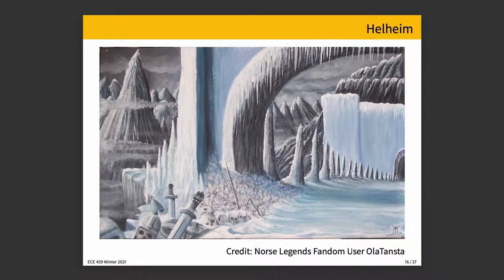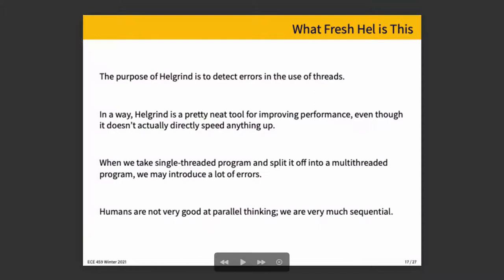We'll take some time to talk about Helgrind. Helgrind, here pictured Helheim, the underworld of Norse mythology, which is a cold, cold place, is intended to detect errors in the use of threads, or more broadly, concurrency problems in general.